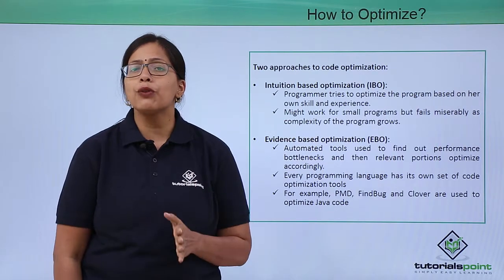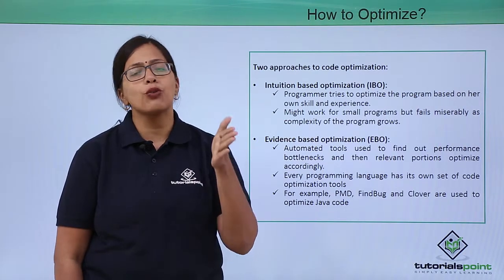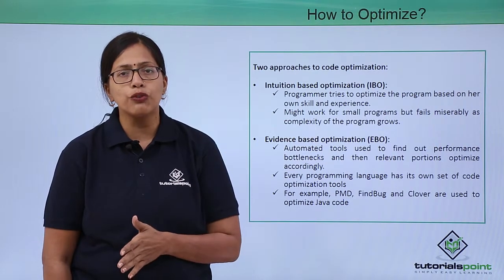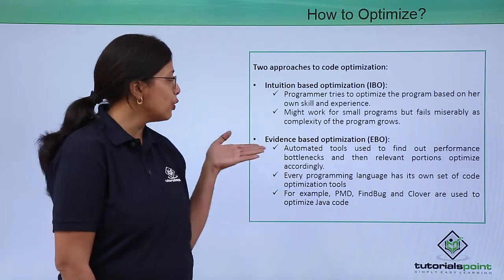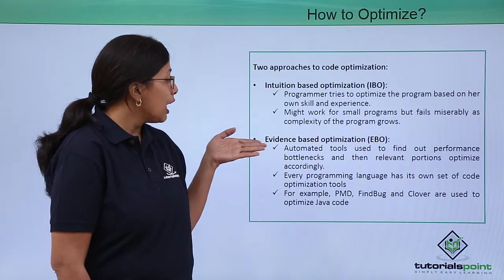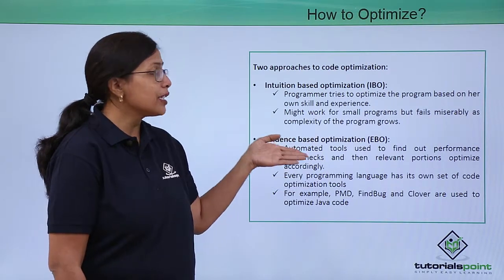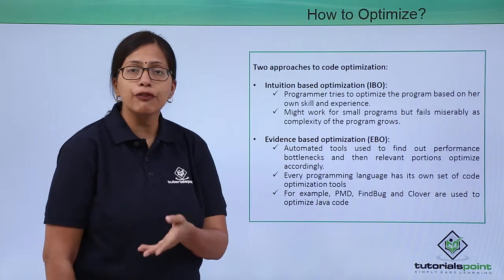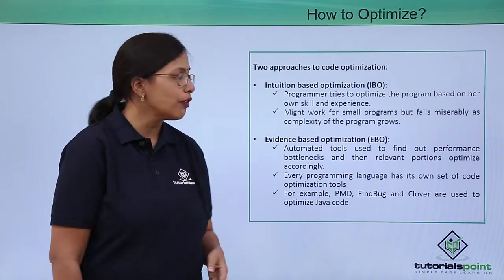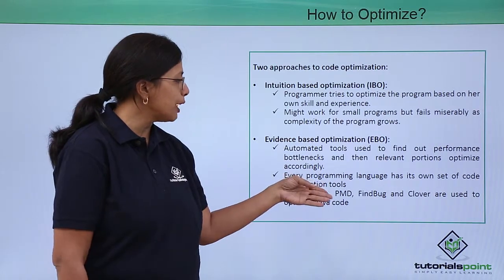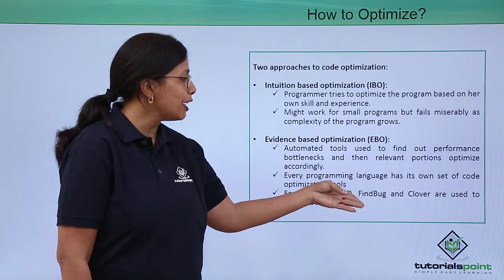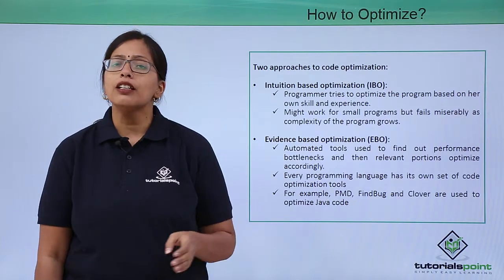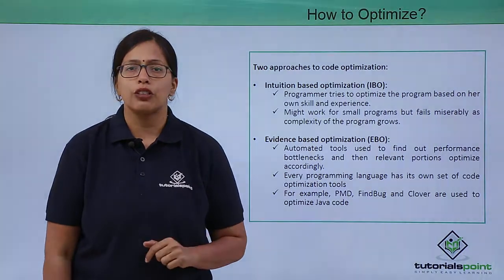Every language has its own set of tools that can be used for evidence-based optimization. For example, if you are using Java, you can use PMD, FindBug, or Clover to optimize the Java code.